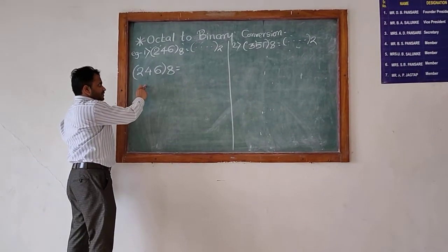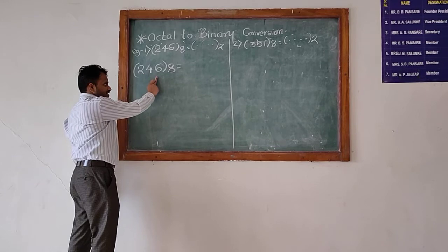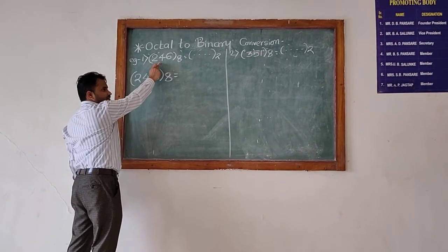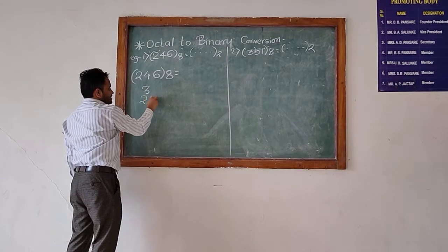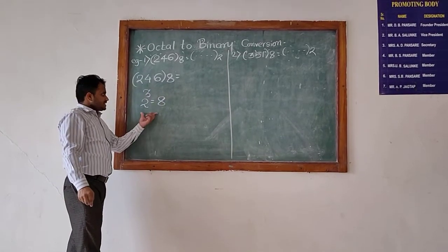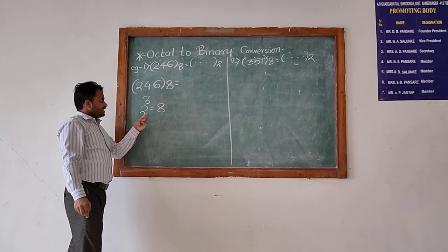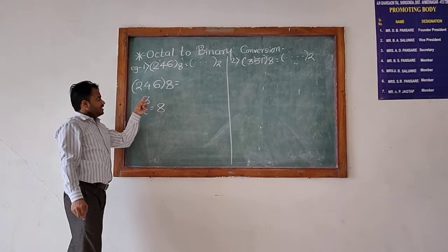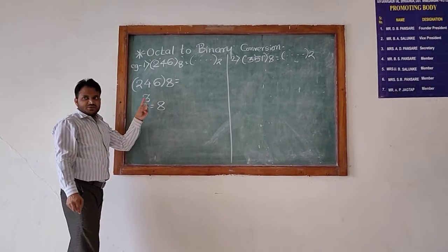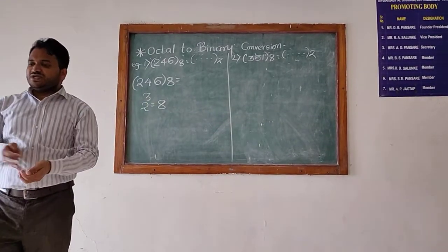But here, one important thing to note is that the base of the given number system is 8. And we know that 2 raised to 3 is equal to 8. That means here we need to keep in mind that the number of bits we need to take is equal to 3. So we need to make a group of 3 bits.